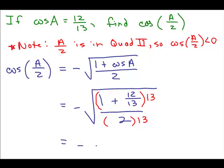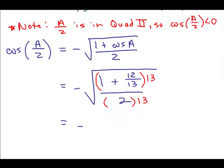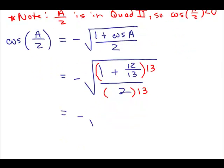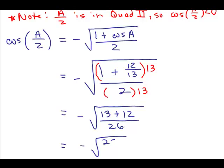So that gives me still this minus sign. And that will give me 13 times 1 is 13. 12/13 times 13 is 12. And I've got 2 times 13, which is 26. So I have negative square root of 25/26.